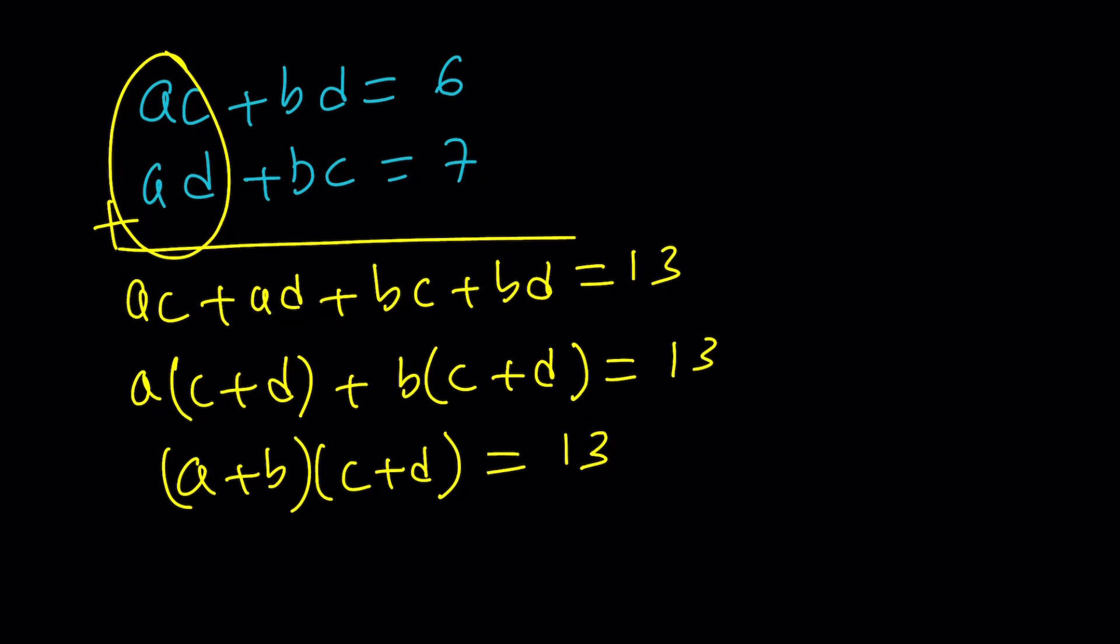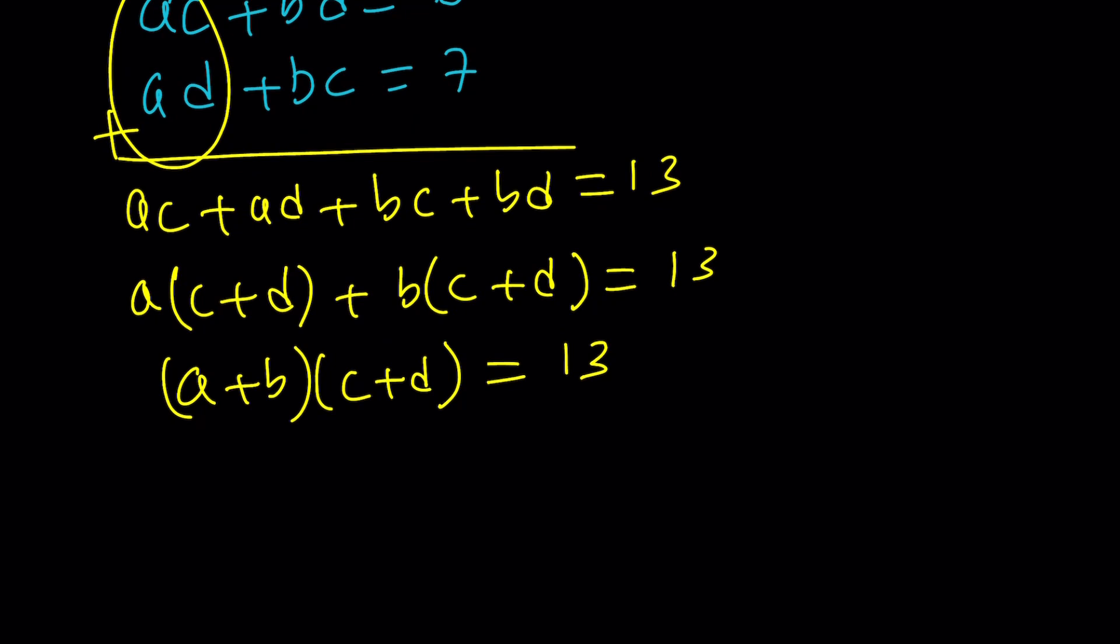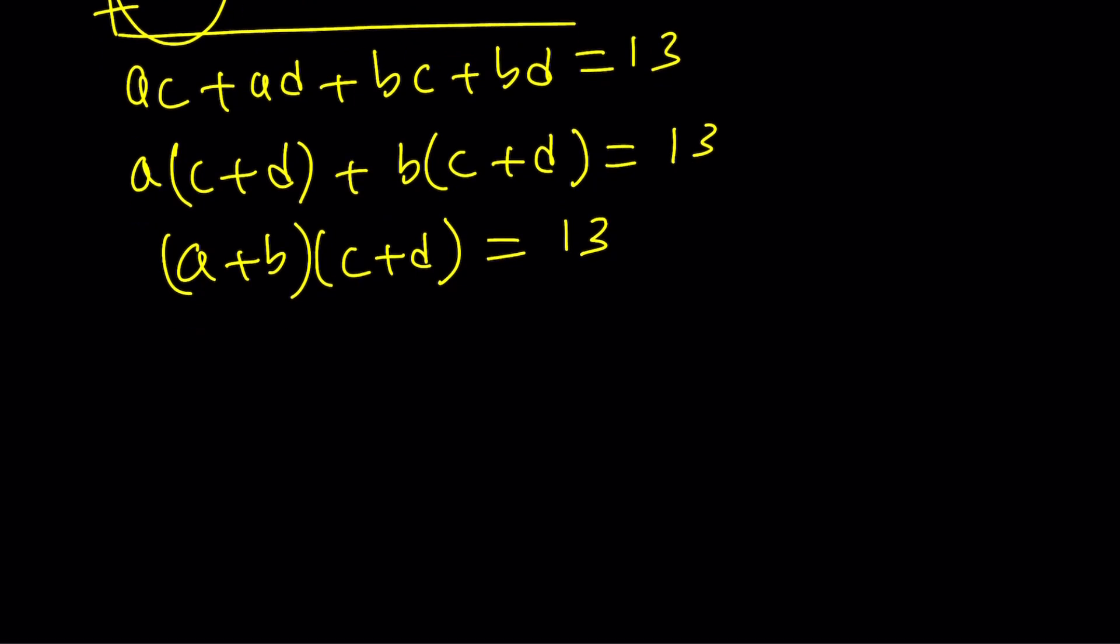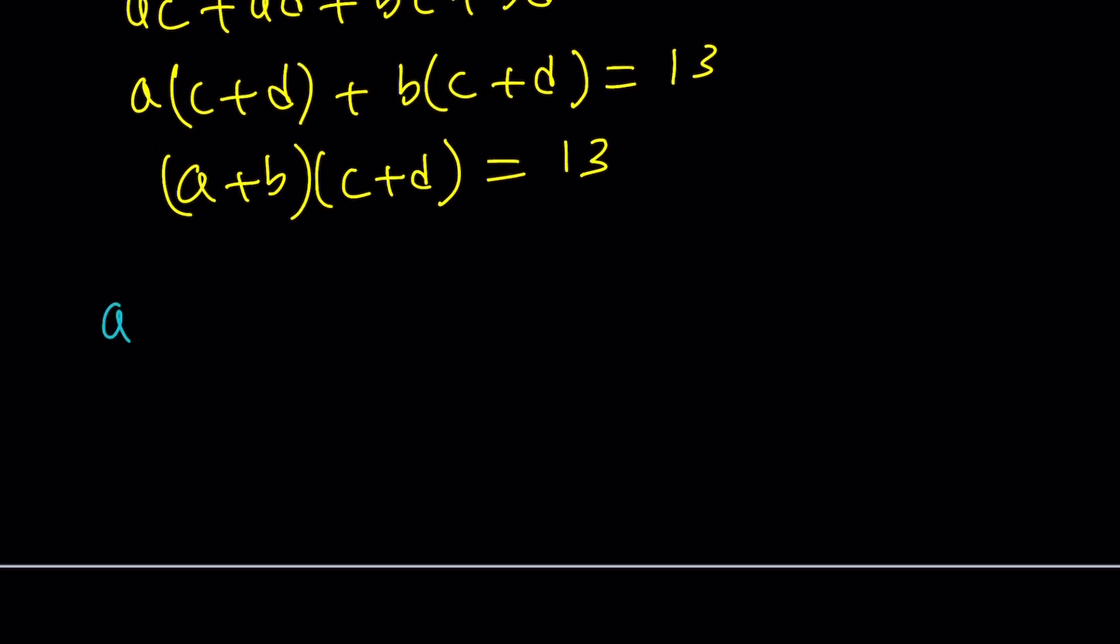We're going to look at factors of 13. And 13 is a prime number, so that's nice, there aren't that many. But we kind of end up with four cases. A + B = 13, C + D = 1. Another case would be A + B = 1, and C + D = 13.